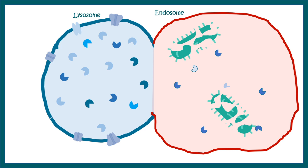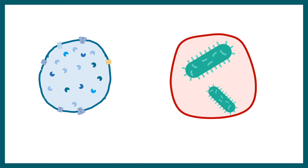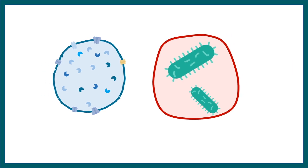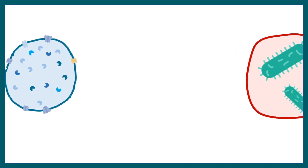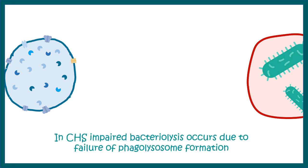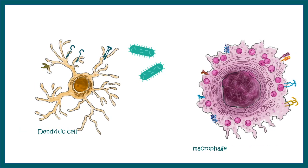But in Chediak-Higashi syndrome, due to a defective LYST gene product, the trafficking of substances in the lysosome is defective. One major implication is that the lysosome cannot fuse with the endosome, so the phagolysosome cannot be formed. As a result, bacteriolysis cannot occur, and this affects several cell types, especially the phagocytic cells of the immune system such as dendritic cells and macrophages.